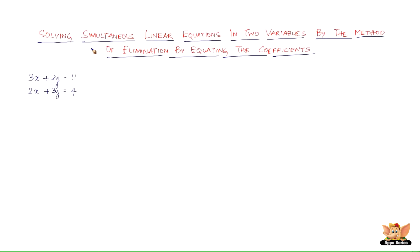In this video, let us look into solving simultaneous linear equations in two variables by the method of elimination by equating the coefficients. We've got a pair of linear equations in two variables. Till now we've solved these kinds of equations either graphically or by the method of substitution. In this video, we're going to solve by the method of elimination by equating the coefficients.